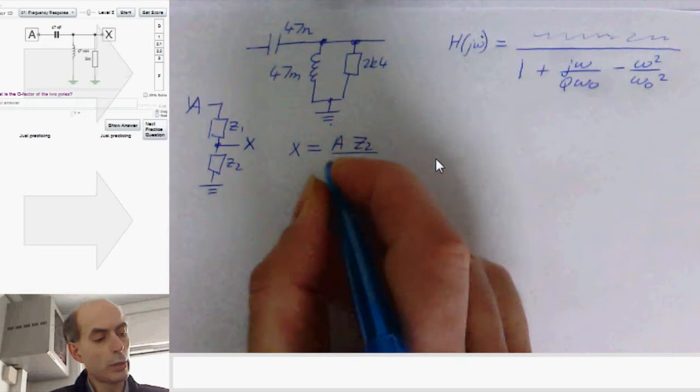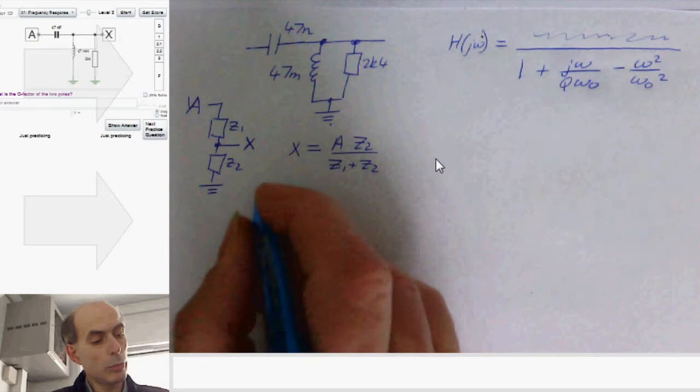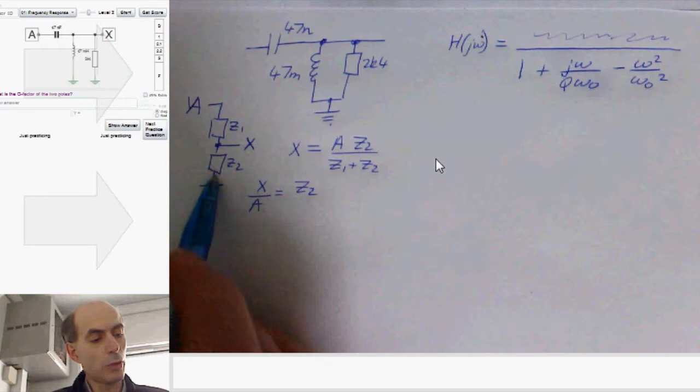Therefore, the gain, which would be x over A, is just z2, the impedance on the bottom, divided by the total impedance, z1 plus z2.